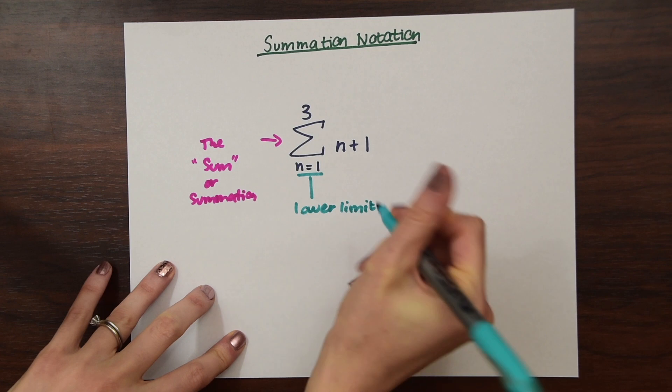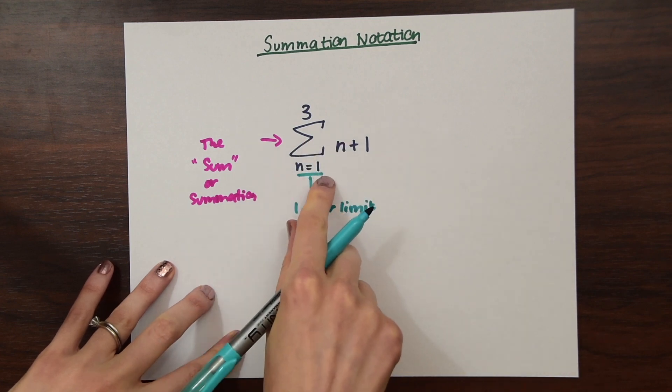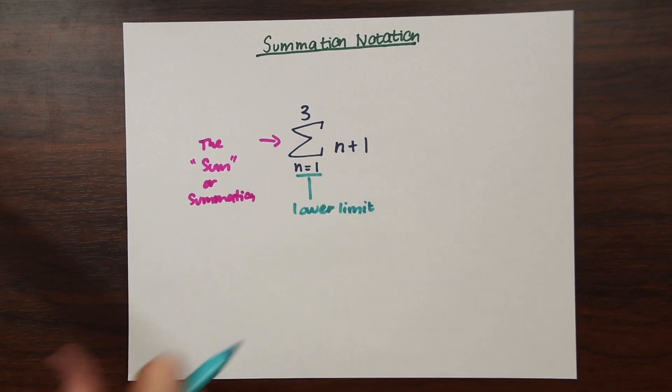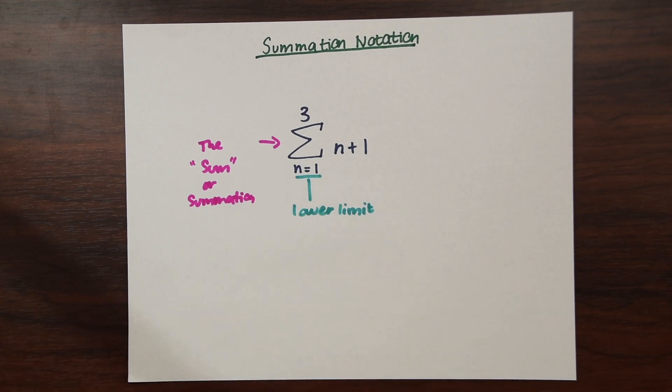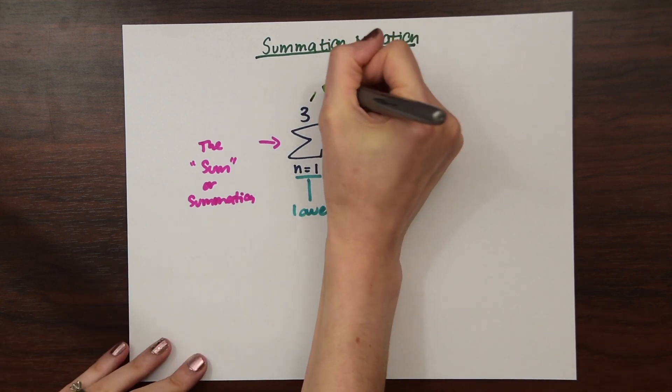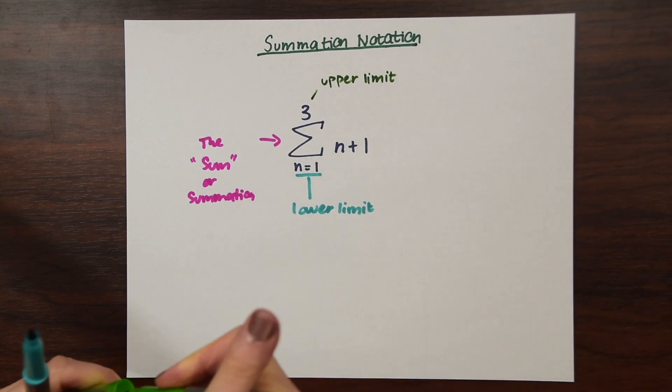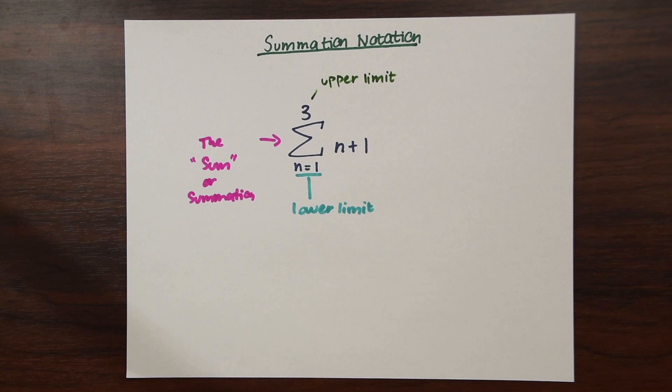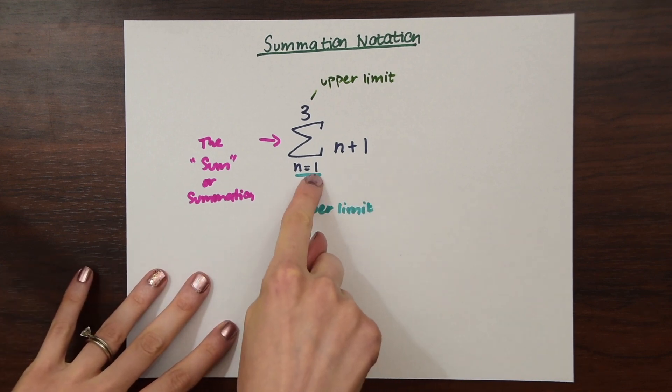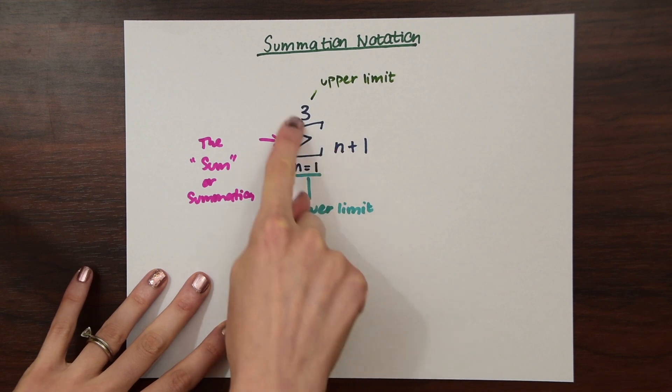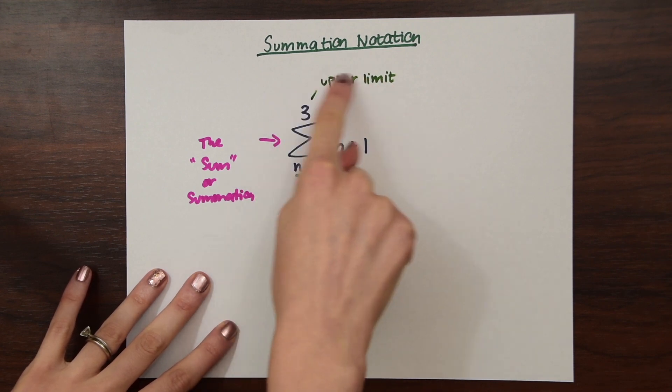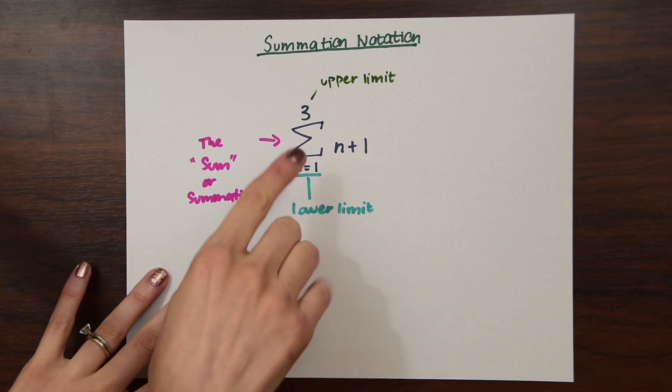What that means is we're going to be taking every number starting at 1 and ending at 3, our upper limit, and plugging in each value for n. And then we're going to be summing those each together. So that means we're going to be plugging in 1 plus 1 and 2 plus 1 all the way up to 3 plus 1 because this is our upper limit.